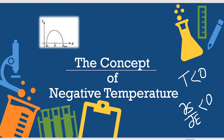Hello everyone. In today's video we will be talking about one of the concepts of statistical physics, that is negative temperatures. So why are we using this temperature as negative? We will be seeing this in the video.